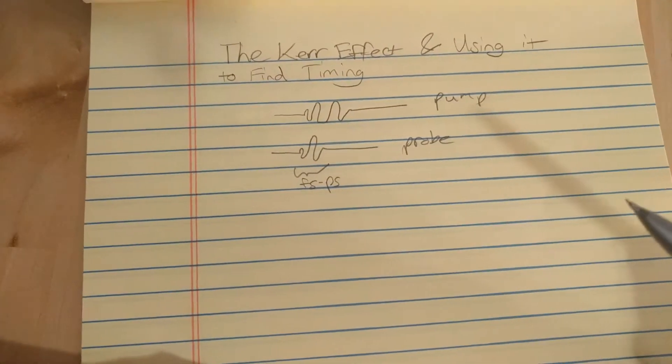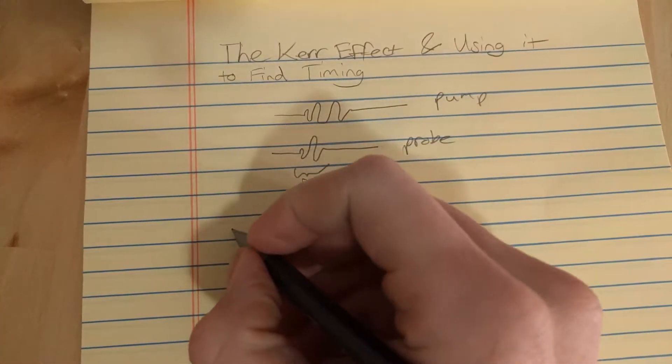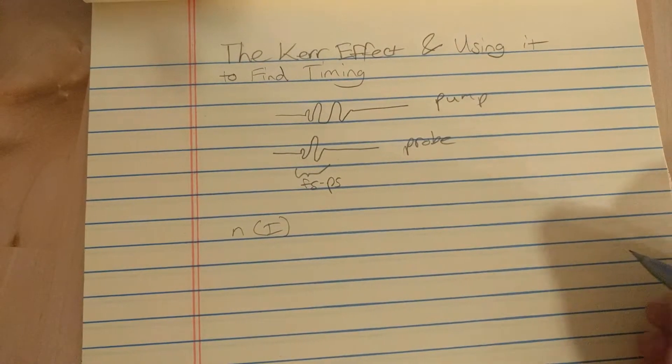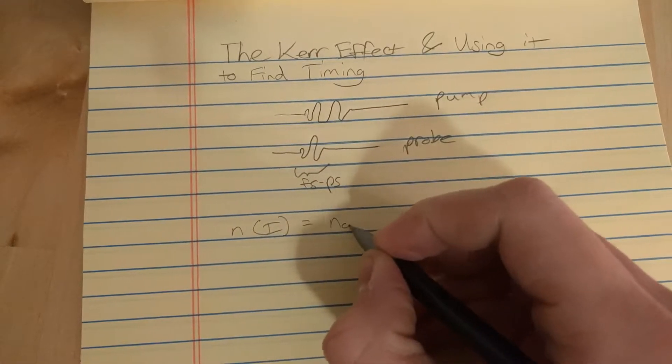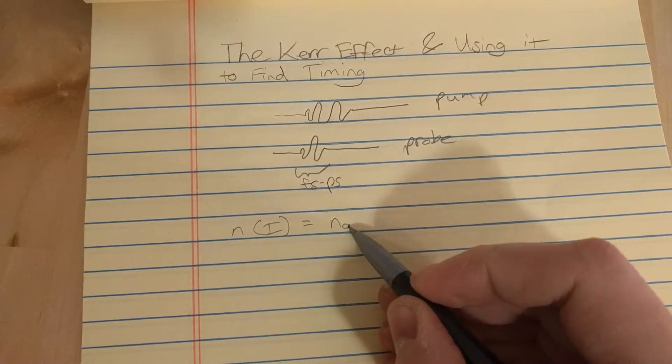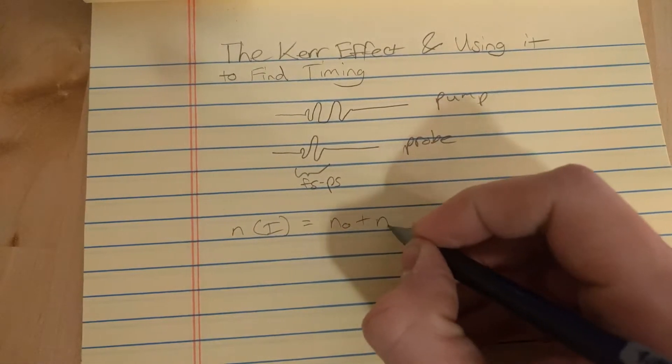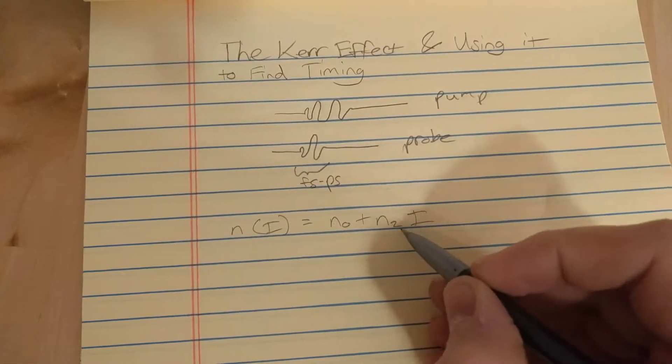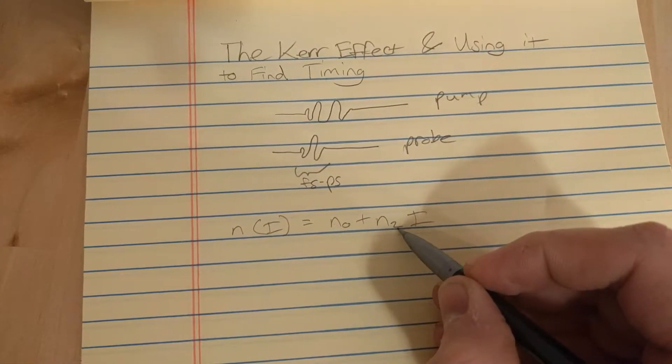And the electric field only varies on the order of femtoseconds to picoseconds. The Kerr Effect essentially says that the index of refraction depends on the intensity of light. And you can write it as the linear index of refraction, a part that does not depend on the intensity, and a part that does depend on the intensity of the nonlinear index of refraction, N2.